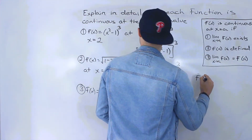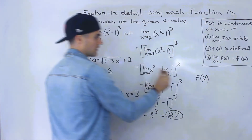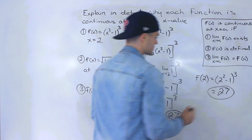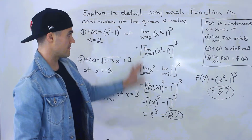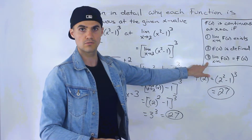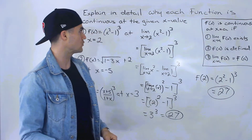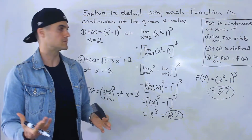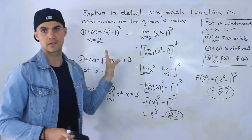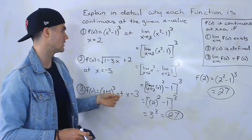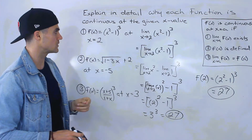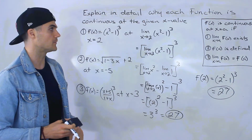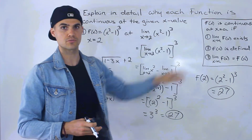Condition two: we need f(2). Plugging 2 into (x² - 1)³ gives (4 - 1)³ = 27 as well. Because the limit equals f(2), that third condition holds, which proves this function is continuous at x = 2. It may seem a bit silly since (x² - 1)³ is continuous for all x — its domain is all reals — but sometimes you have to show it in detail using those three conditions.